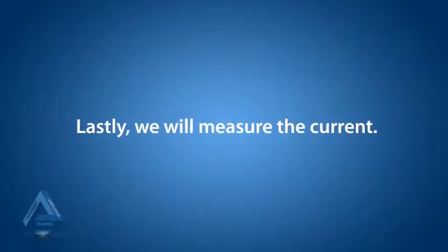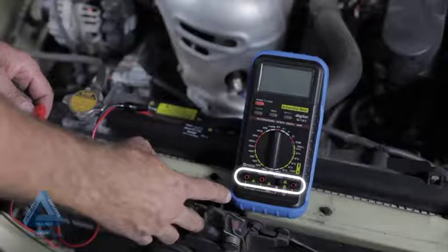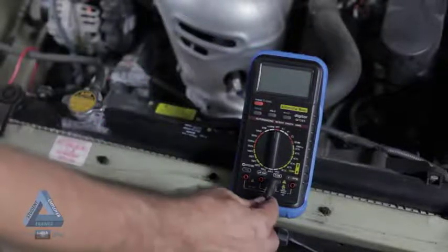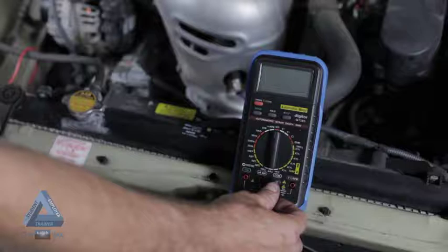Lastly, we will measure the current. On the multimeter there are three or more sockets. The black socket traditionally is for the black plug. However, there are two red sockets.